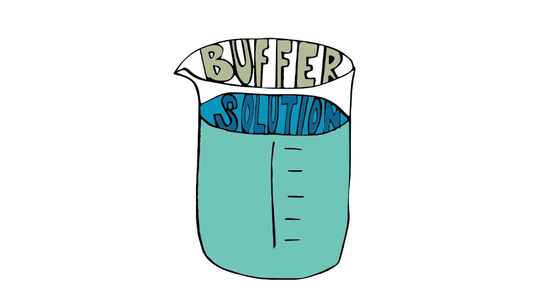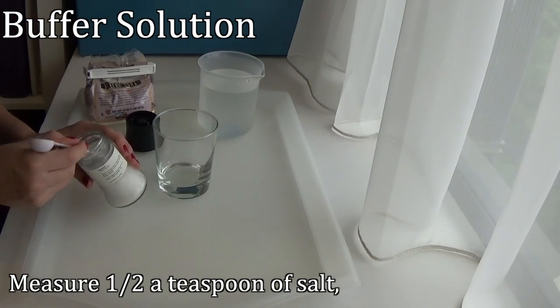Next, you need to make a buffer solution. This will break open the banana cells and help isolate the DNA. First, measure out half a teaspoon of salt and add it to a cup.